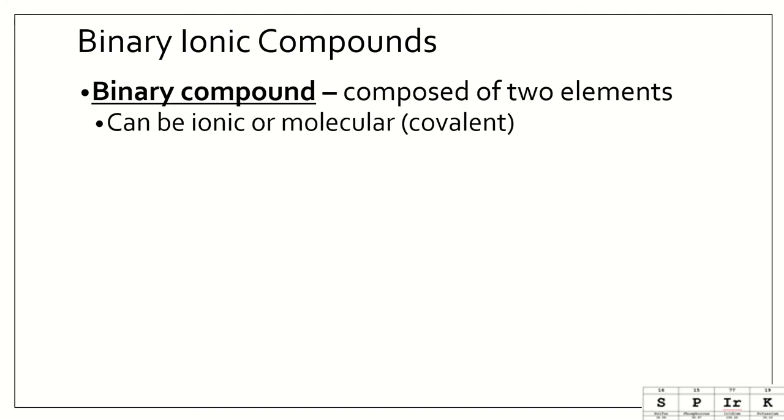Binary Ionic Compounds. A binary compound, remember bi means two, is composed of two elements. It can be ionic or molecular, which we know is covalent.